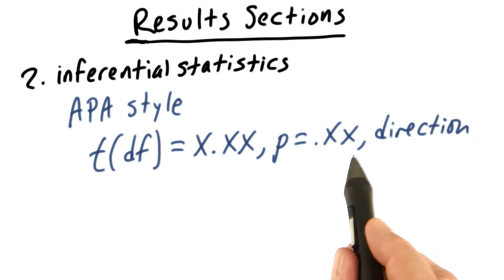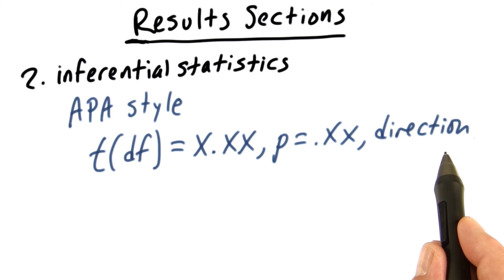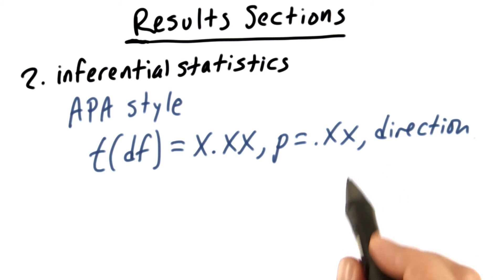Then we give the p-value, again, rounded to two decimal places. There are some exceptions to this rule, but for the most part, this is how you do it. And then we put another comma, and we tell the direction of the test, whether it's one-tailed or two-tailed. I'll give you a more concrete example in a little bit.